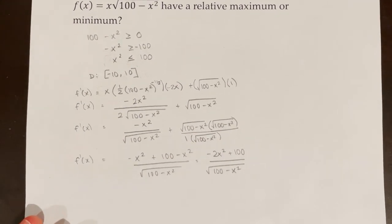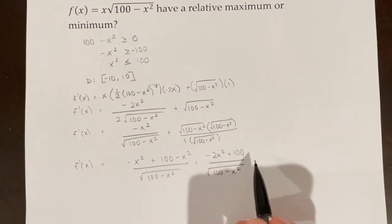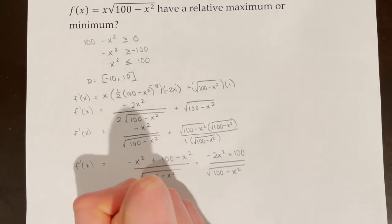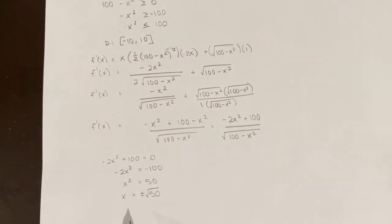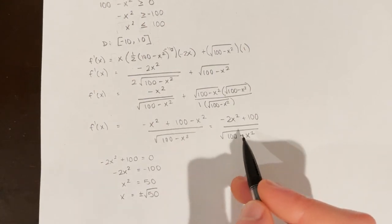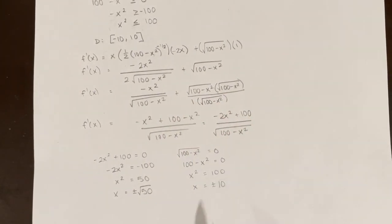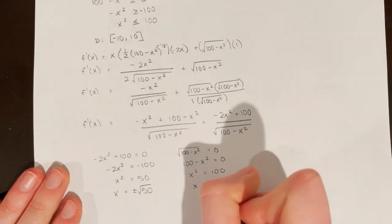Now I look for critical points. Setting the numerator equal to 0: negative 2x squared plus 100 equals 0, giving x equals plus or minus the square root of 50. These are within the domain from negative 10 to 10. Setting the denominator equal to 0 gives x equals plus or minus 10, but these are endpoints and critical numbers cannot exist at endpoints, so they are not critical numbers.